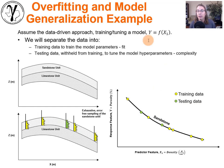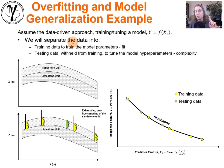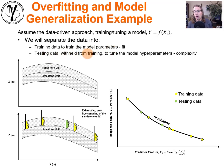With predictive machine learning methodologies, we're going to train a model and tune it. That model will take us from the predictor feature through some type of transform — from density to porosity. We're going to separate the data into two groups: training and testing. The training data are used to train the model parameters, and the testing data are withheld. We're going to use them to tune the hyperparameters that control the complexity of the model.